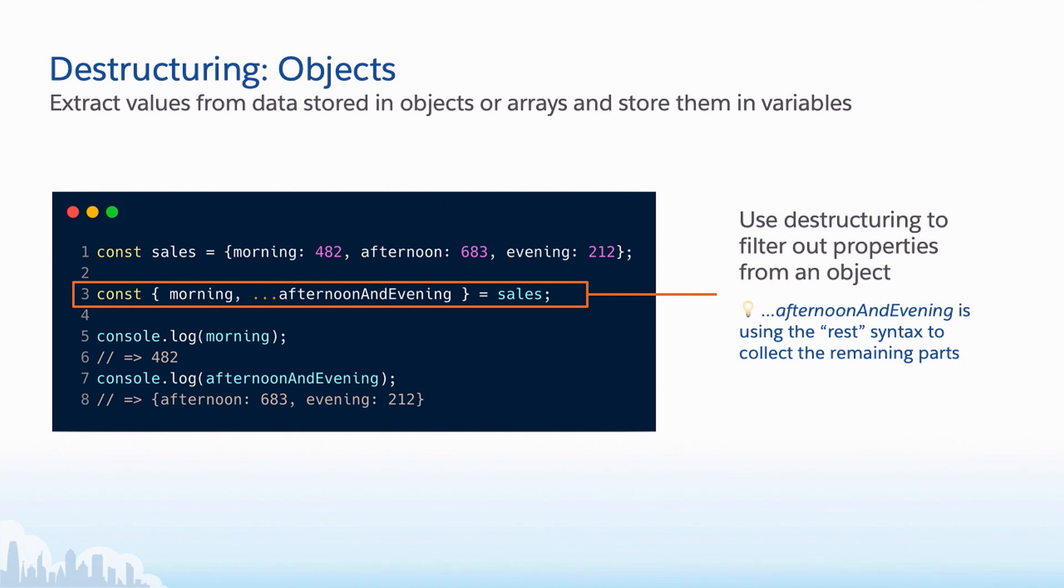So destructuring, if you haven't heard this before or you're not from computer science, it's just extracting values from data stored in objects and arrays and then storing them in variables. So let's take a look at the code example. We have an object called sales. Okay? And on line three, we're doing some destructuring. And we're actually doing a rest operator here as well. So I'll walk into that. On line three, after our const declaration, we have some curly braces. So whenever we destructure from an object, we have to use those curly braces. You can destructure from an array as well, which we'll see on the next slide. And you'll see that we're using the square brackets to designate that we're destructuring from an array.